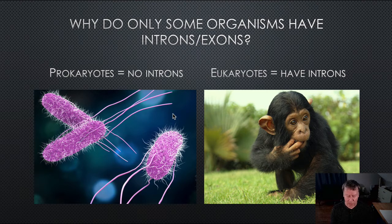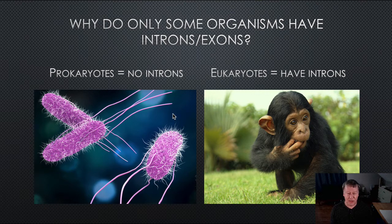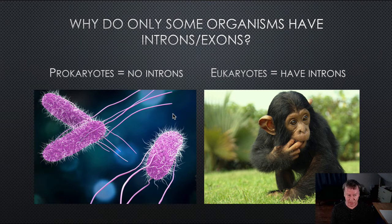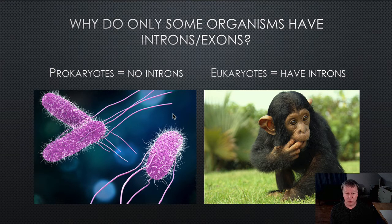Well, one of the questions we ask as biologists is which came first. Prokaryotic cells existed on this planet for more than one billion years before eukaryotic cells showed up. So prokaryotic cells were definitely here first. And that implies the original state was no introns.